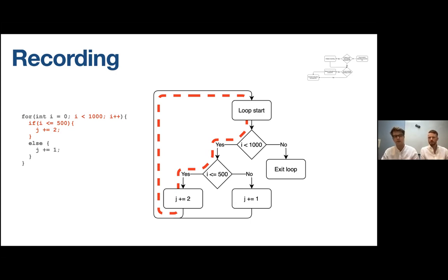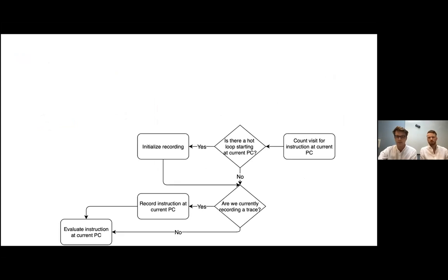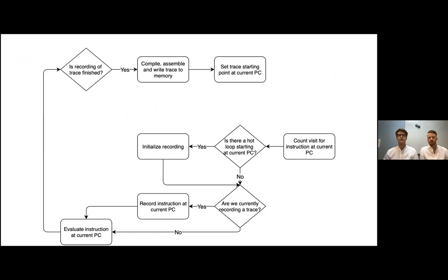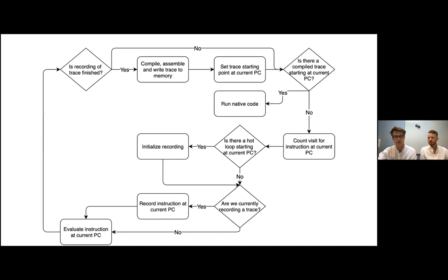When we branch out of the trace, the interpreter must take back control, so we need to keep track of where it's supposed to continue evaluating after exiting. We call these cases side exits. Recording continues until the start of the loop is once again reached, and when recording is finished the recorded trace can be compiled into native code and saved into memory so that we can execute it at a later stage whenever we want to.